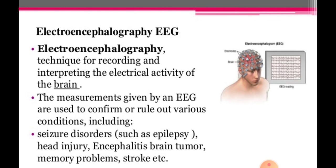EEG, that is electroencephalography, is a technique for recording and interpreting the electrical activity of the brain. The measurements given by an EEG are used to confirm or rule out various conditions including seizure disorders, head injury, encephalitis, brain tumor, memory problems, and stroke.